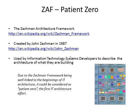The ZAF was created by John Zachman, who was working for IBM at the time of initial publication in 1987. A further biography of John Zachman can be read at Wikipedia. The ZAF is used by information technology systems developers to describe architectures of both current systems and of future systems to be built.